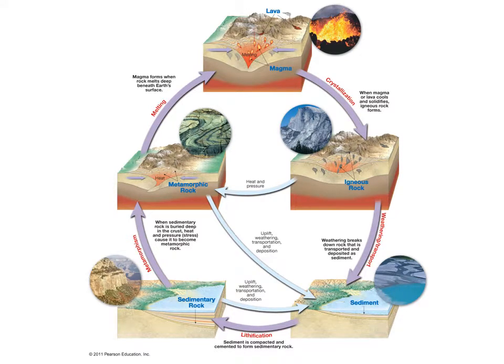In the last video we talked about plate tectonics and how it's a grand unifying theory that does a lot of the moving and shaking of creating landforms on Earth. In the next three videos, we're going to take a spin around the rock cycle — talk about different rocks, how we identify them, how they're formed, and the landforms they make. Then in further videos we'll see how plate tectonics and these rocks fit together.